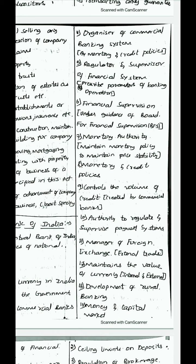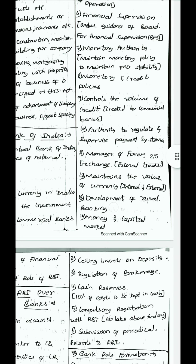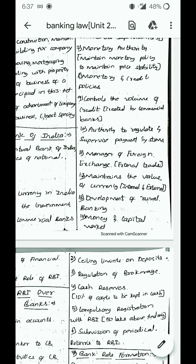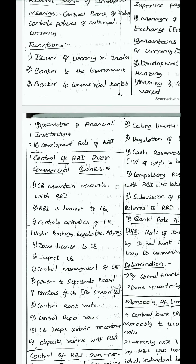RBI is a regulator and supervisor of the financial system by prescribing parameters of banking operations, and gives financial supervision under the guidance of the Board for Financial Supervision. It provides monetary authority by maintaining monetary policy to maintain price stability, and monetary and credit policies. It controls the volume of credit created by commercial banks — the amount of loan a commercial bank can give. It has authority to regulate and supervise payment systems, manage foreign exchange and external trade, and maintain the value of currency internally and externally. It also promotes development of rural banking, money and capital markets, and financial institutions.